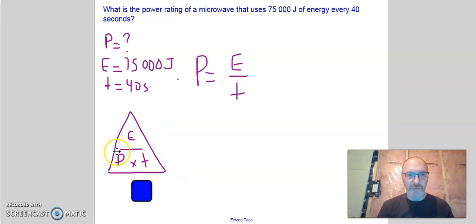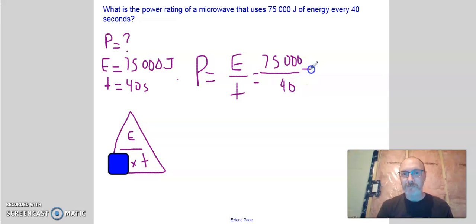When we're using the power formula, we can use this triangle here since it's only made of three variables, and we've seen versions of this with density. So we cover up P. What we're asked to find, what's left over is E over T, and this is what we have written here. So now all we have to do is substitute our values in. So 75,000 divided by 40 seconds like this, and we plug that into our calculator. 75,000 divided by 40, and that gives me 1,875 watts. Because this is joules over seconds. A joule per second is a watt.